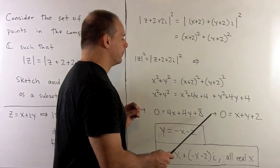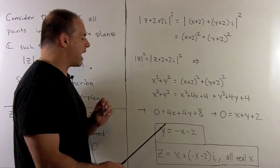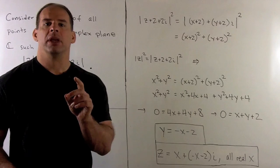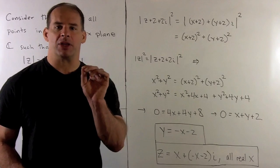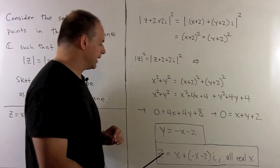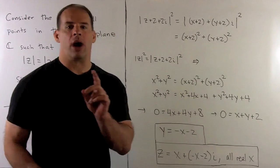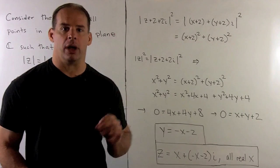When we simplify, we'll have the equation of a line: y = -x - 2. So the set of all points of the complex plane will be given by z = x + (-x-2)i, where I let x range over all real numbers.